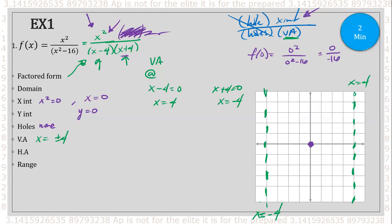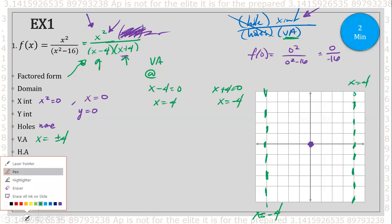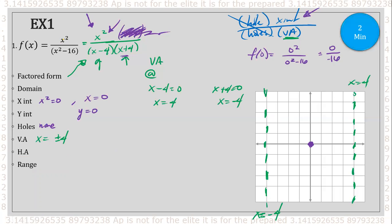How about horizontal asymptotes? Let's check the degrees — degree of two in the numerator and degree of two in the denominator. They're the same, so I take the coefficients, which are both one. Therefore the horizontal asymptote is y equals one.